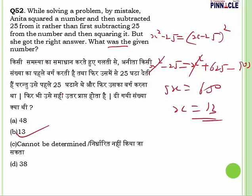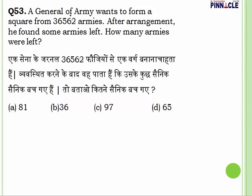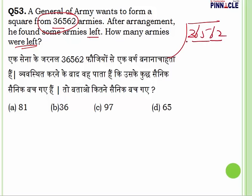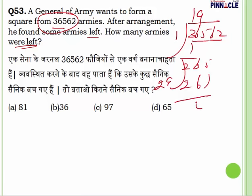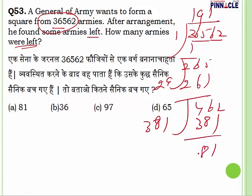Question number 53: a general of an army wants to form a square from 36562 soldiers. After arrangement, he found some soldiers left. We need to find the square root of 36562. Using the long division method, you find the remainder is 81. So 81 soldiers are left — answer is A.